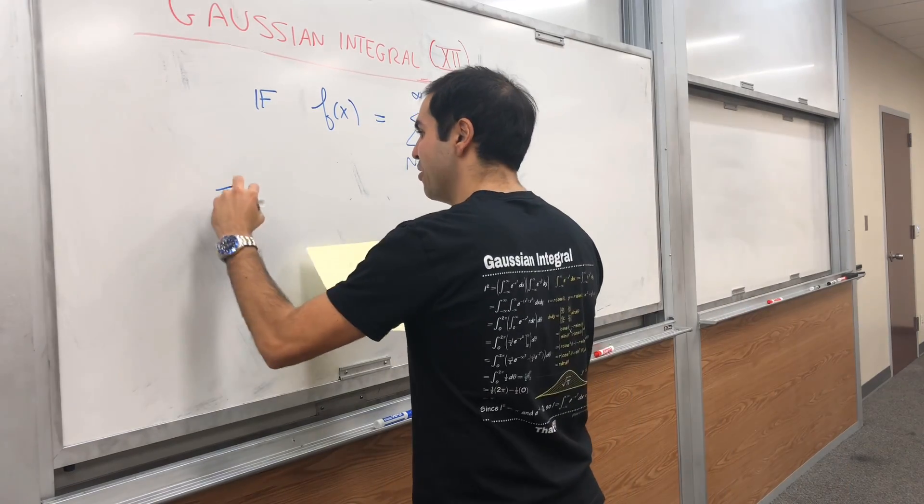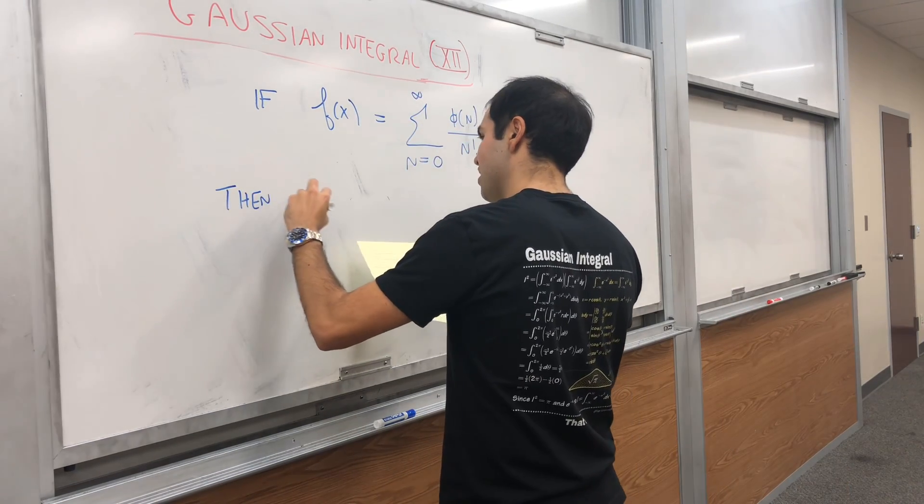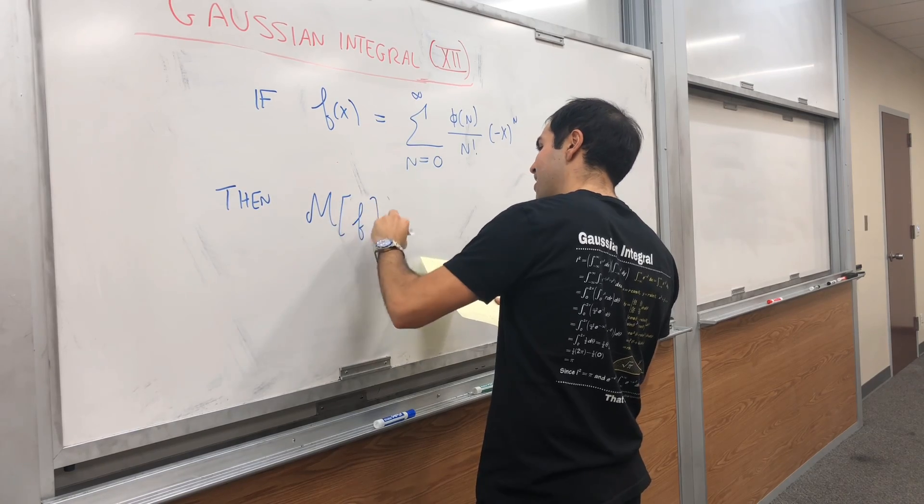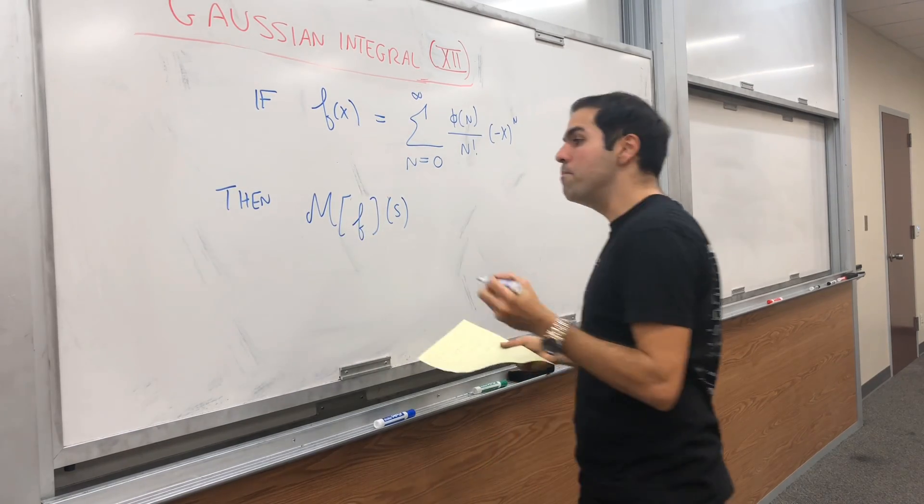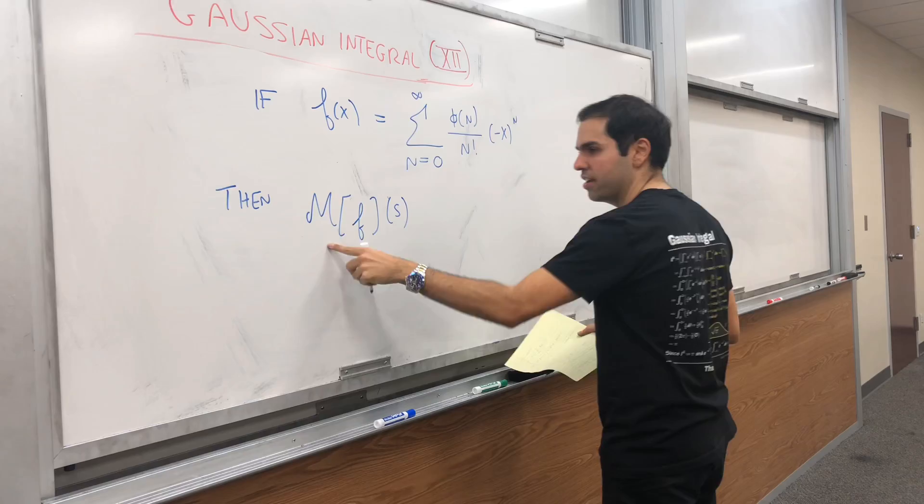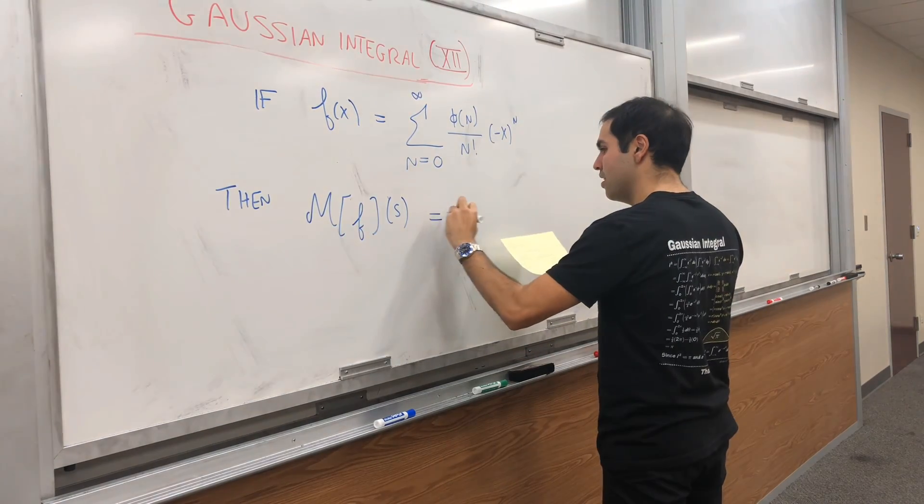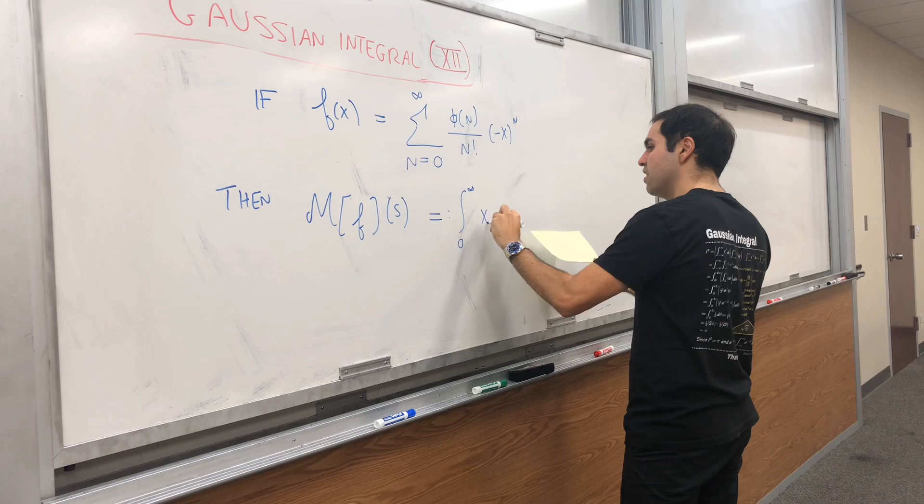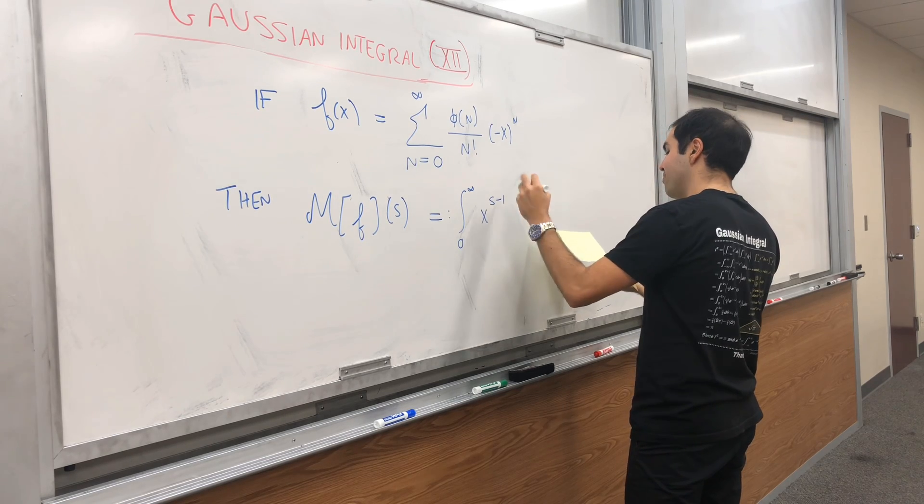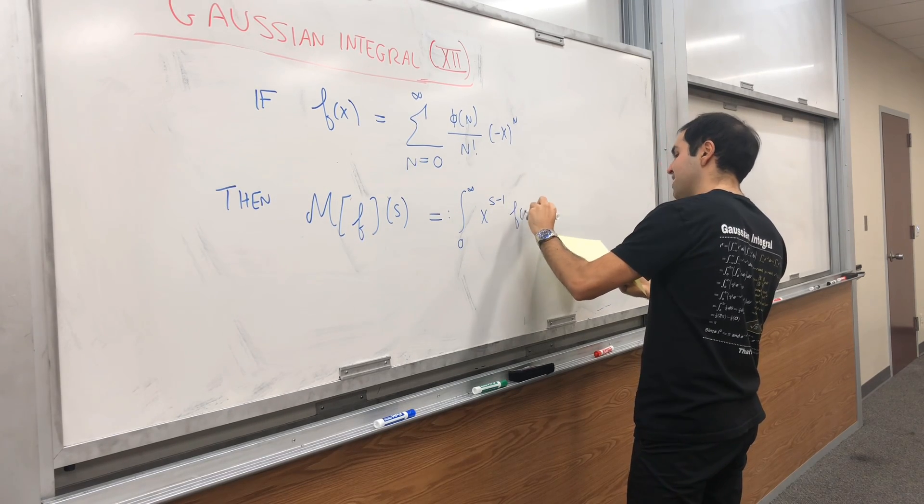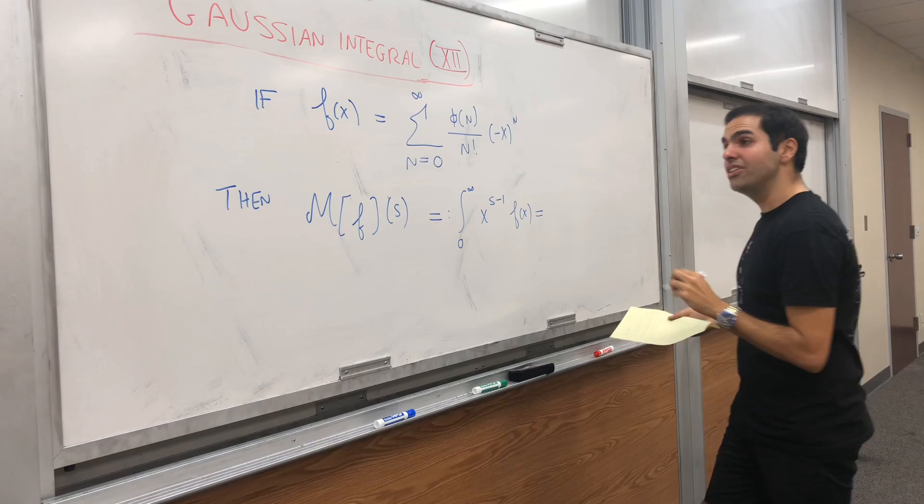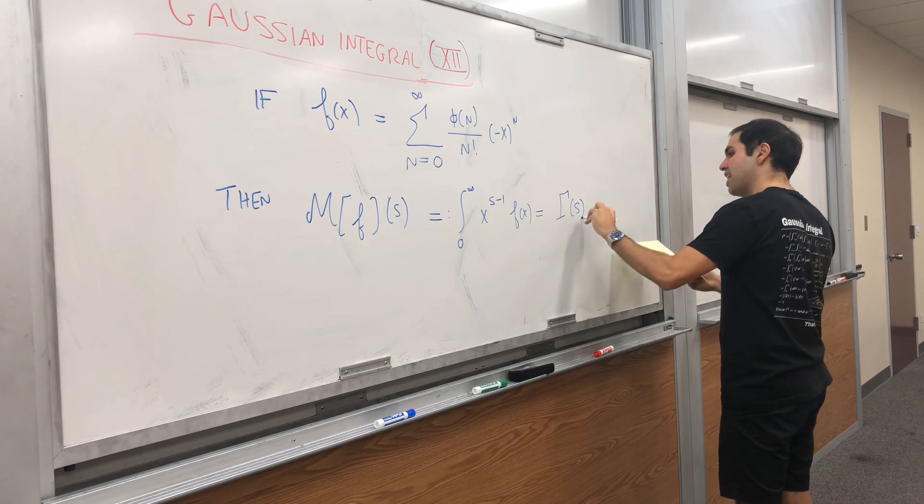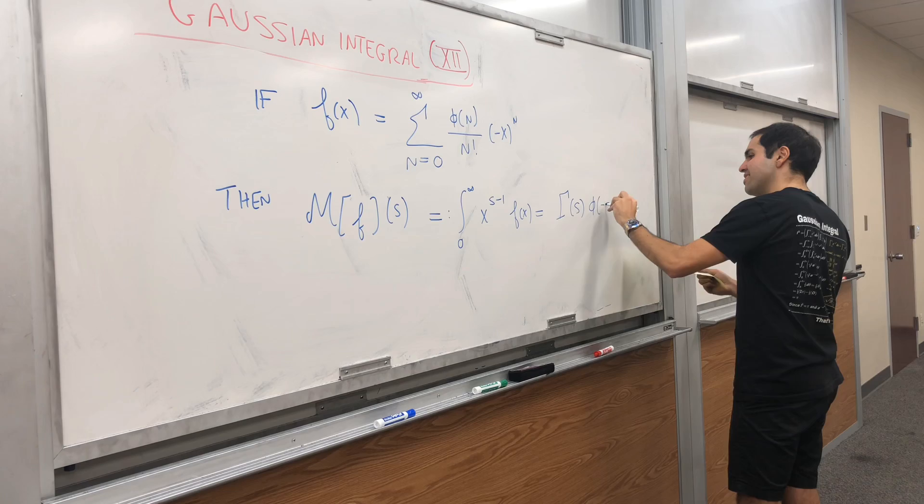Then it turns out that the following integral simplifies. This is called the Mellon transform, that's why there's an M. The integral from 0 to infinity of x to the s minus 1 times f of x dx is actually equal to gamma of s times phi of minus s.